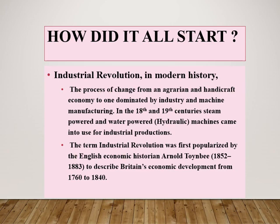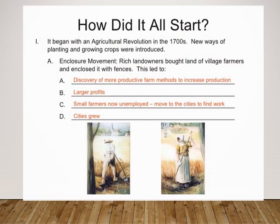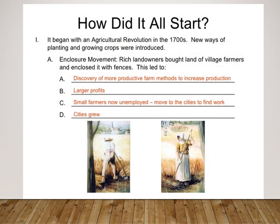Although used earlier by French writers, the term 'Industrial Revolution' was first popularized by the English economic historian Arnold Toynbee to describe Britain's economic development from 1760 to 1840. It all began with an agricultural revolution in the 1700s — new ways of planting and growing crops were introduced. Rich landowners bought land from village farmers and enclosed it with fences, known as the Enclosure Movement.